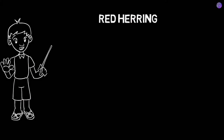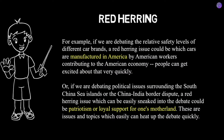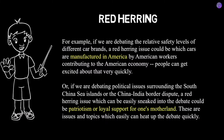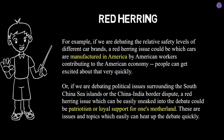A red herring argument is one that is introduced into a debate, usually in a sneaky and covert manner, meant to incite controversies and get people excited and heated up, thereby diverting attention away from the opponent's argument. The red herring should be somewhat related to the main issue being debated, otherwise people would realize the subject is being arbitrarily changed. For example, if we are debating the relative safety levels of different car brands, a red herring could be which cars are manufactured in America by American workers contributing to the American economy. Or if we are debating political issues surrounding the South China Sea Islands or the China-India border dispute, a red herring that can easily be sneaked into the debate could be patriotism or loyal support for one's motherland — issues which can easily and quickly heat up the debate.